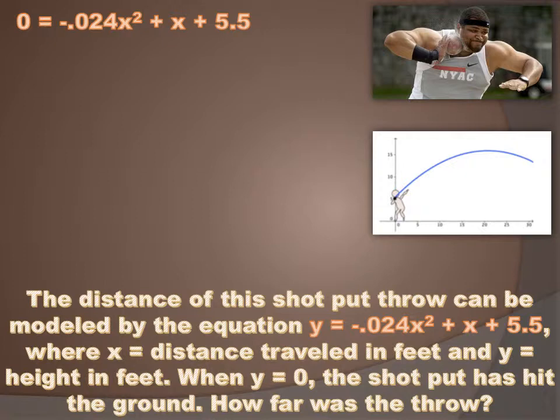Here's a real-life example. Somebody figured out that you could model the flight of a shot put, which is a parabola, with the equation y equals negative 0.024x squared plus x plus 5.5, where x equals the distance the shot put traveled and y equals the height of the shot put, both in feet. When y equals 0, the height is zero — the shot put is back on the ground. We can use that to find x, the length of the throw. So we have 0 equals negative 0.024x squared plus x plus 5.5, and since I can't factor that, I'm going to use the quadratic formula.